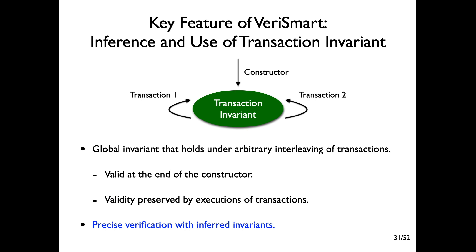It is the ability to automatically infer and use transaction invariants hidden in smart contracts. A transaction invariant is a global property that holds under arbitrary interleaving of transactions. More specifically, it should be valid at the end of the constructor and its validity should be preserved by executions of transactions. VarySmart can perform much more precise verification by leveraging inferred invariants during the verification process.